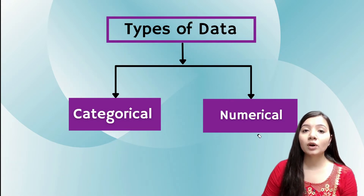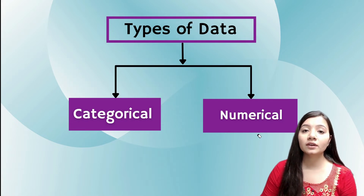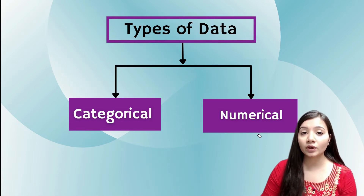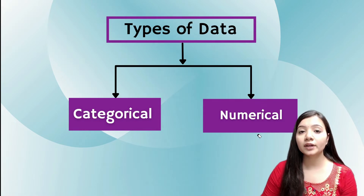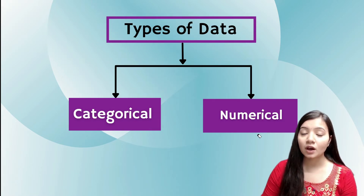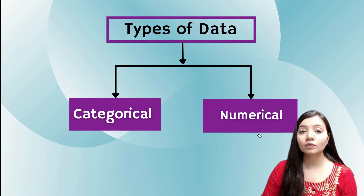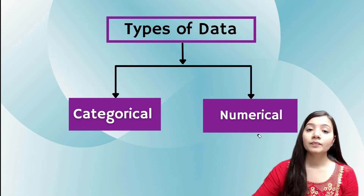Simply, if any column contains string values or character values, then it will be called categorical data. And if it contains numbers, then it will be called numerical data or quantitative data.